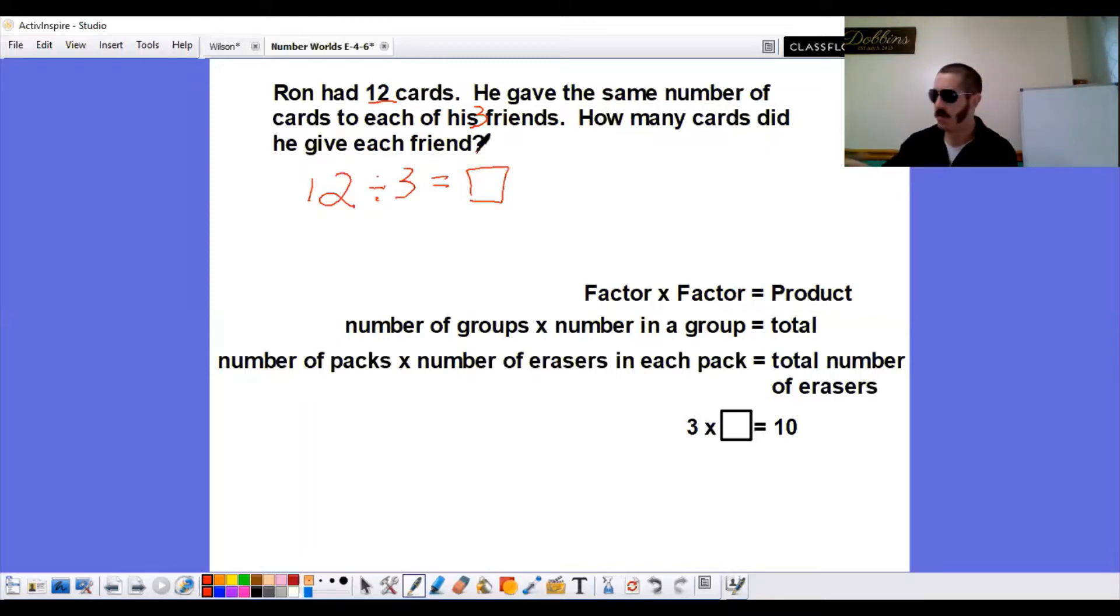The facts that we know. So we're going to come down and this is the same thing that we had before. What do we know? Well, we know 12 is our total. So we know 12 is our total. We know three is our number of groups.